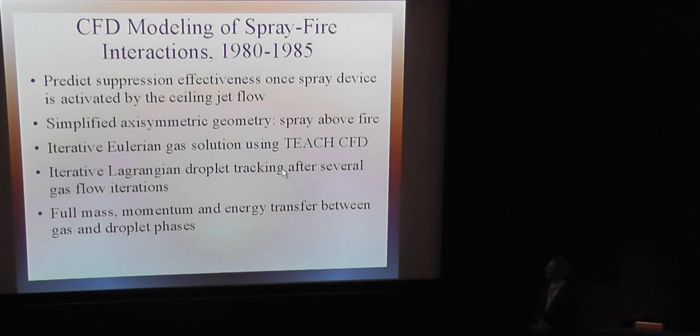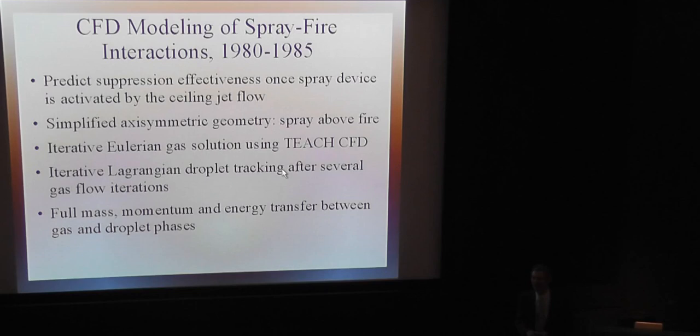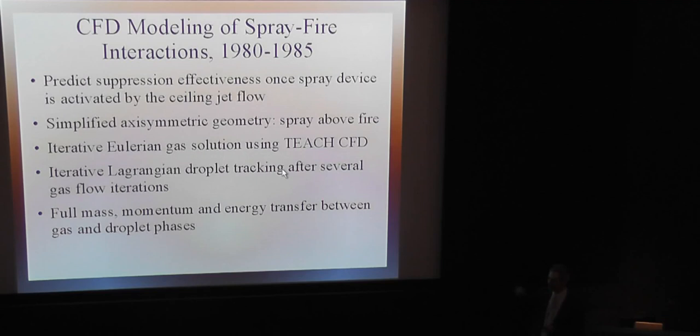You have an Eulerian gas solution using the TEACH CFD code for the gas phase, and Lagrangian droplet tracking through that gas solution. You track the droplets through the gas, and there is mass, momentum, and energy transfer between the gas and the droplets in each computational cell. The droplets deposit mass, momentum, and energy in each cell, and based on those sources you run the gas calculation for several iterations. This is a steady-state program, so you iterate to convergence and then repeat the whole thing all over again. It takes a long time, and hopefully you get the converged solution.